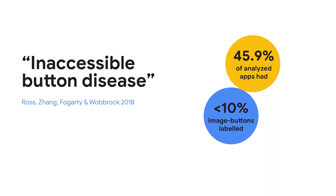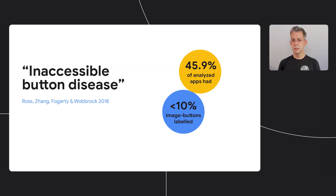There have been some studies into this — if you Google 'inaccessible button disease,' you'll find a good one. And sometimes, even when developers put in the work, they focus on screen readers, and text that works there isn't so good for Voice Access. But what if Voice Access could look at images on screen in the same way a sighted person would recognize icons and give them labels?